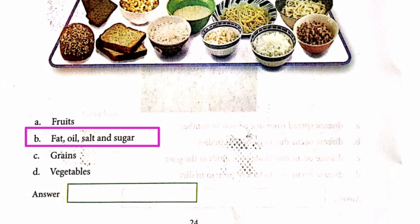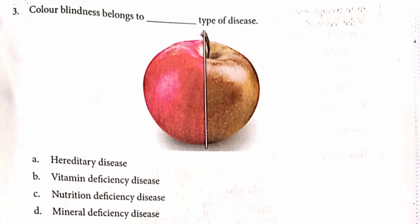Question number 3. Color blindness belongs to which type of disease? The answer is A. Hereditary disease.